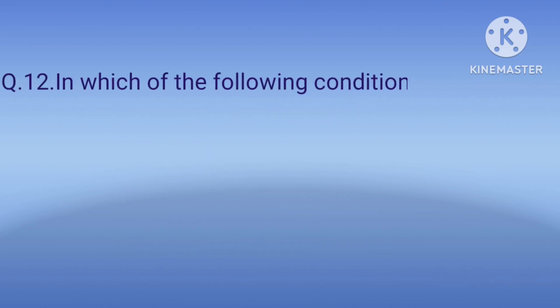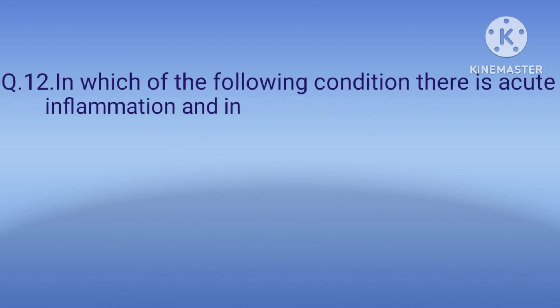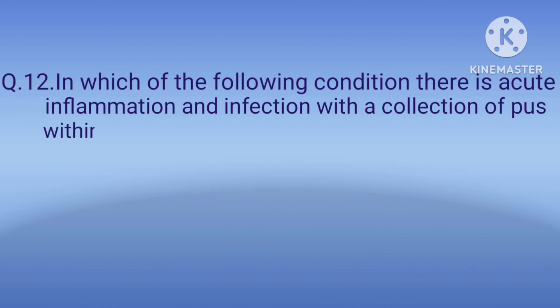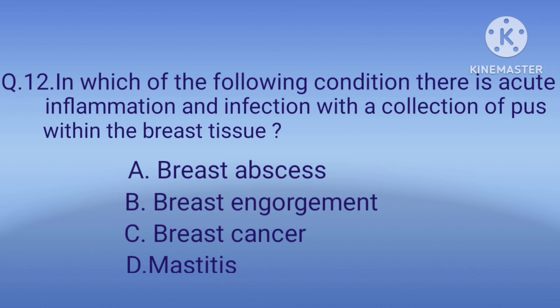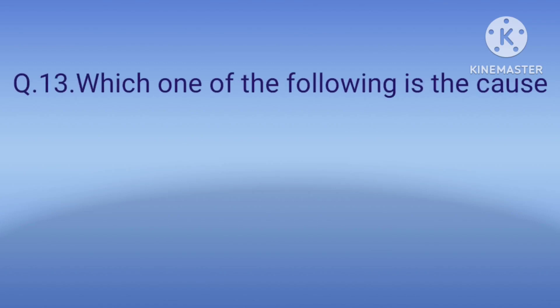Question 12: In which of the following conditions is there acute inflammation and infection with a collection of pus within the breast tissue? Option A: breast abscess, option B: breast engorgement, option C: breast cancer, option D: mastitis. The correct option is A, breast abscess.